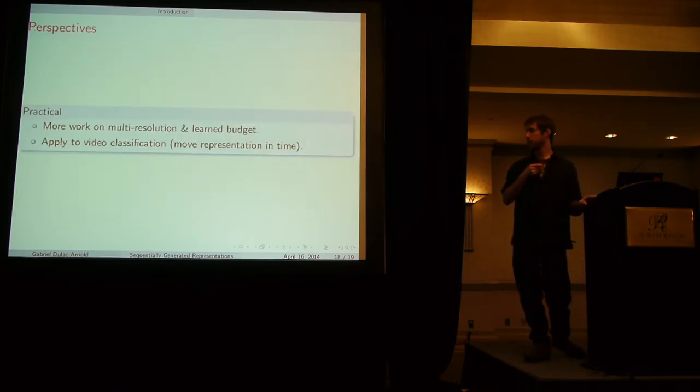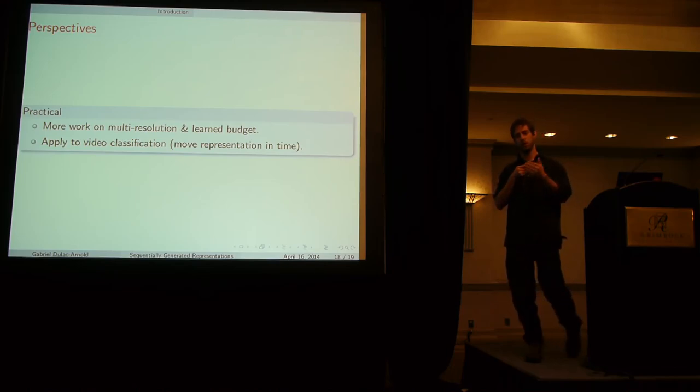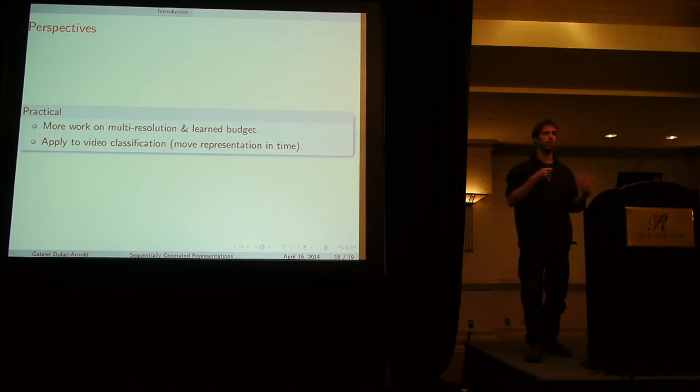There's a little bit more work on multi-resolution and learned budget, especially getting the budget to learn more quickly, because if you want to learn to stop, you can do it. But your training algorithm suddenly gets a lot more complex, because you have to not only learn what to choose, but also when to classify.